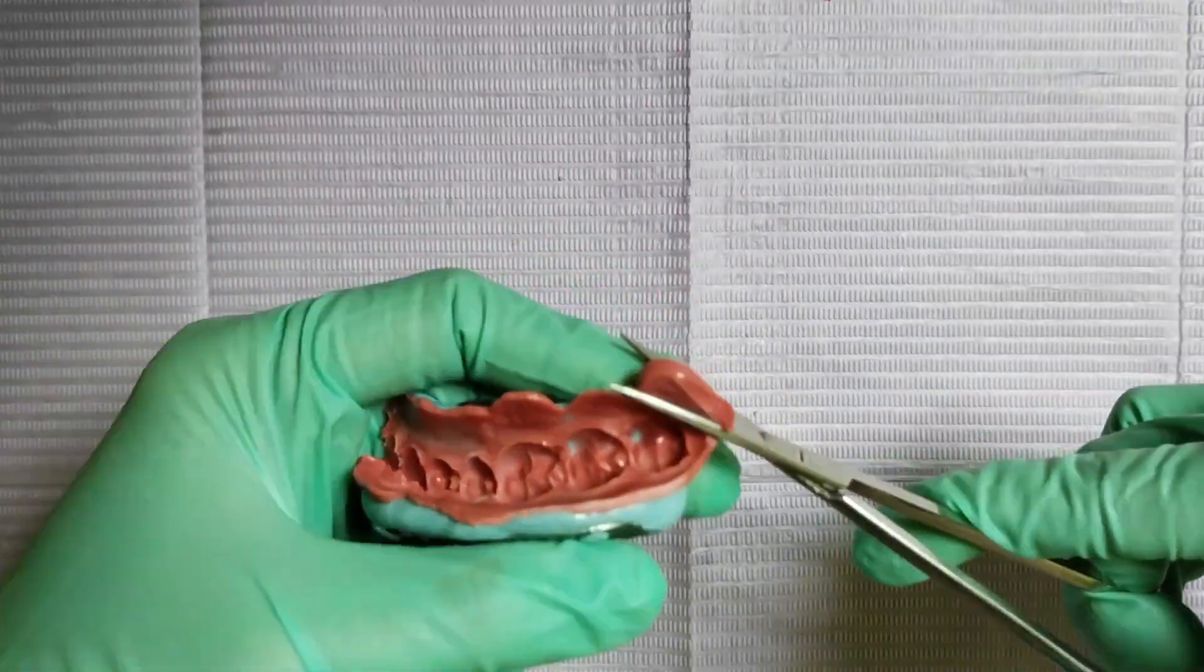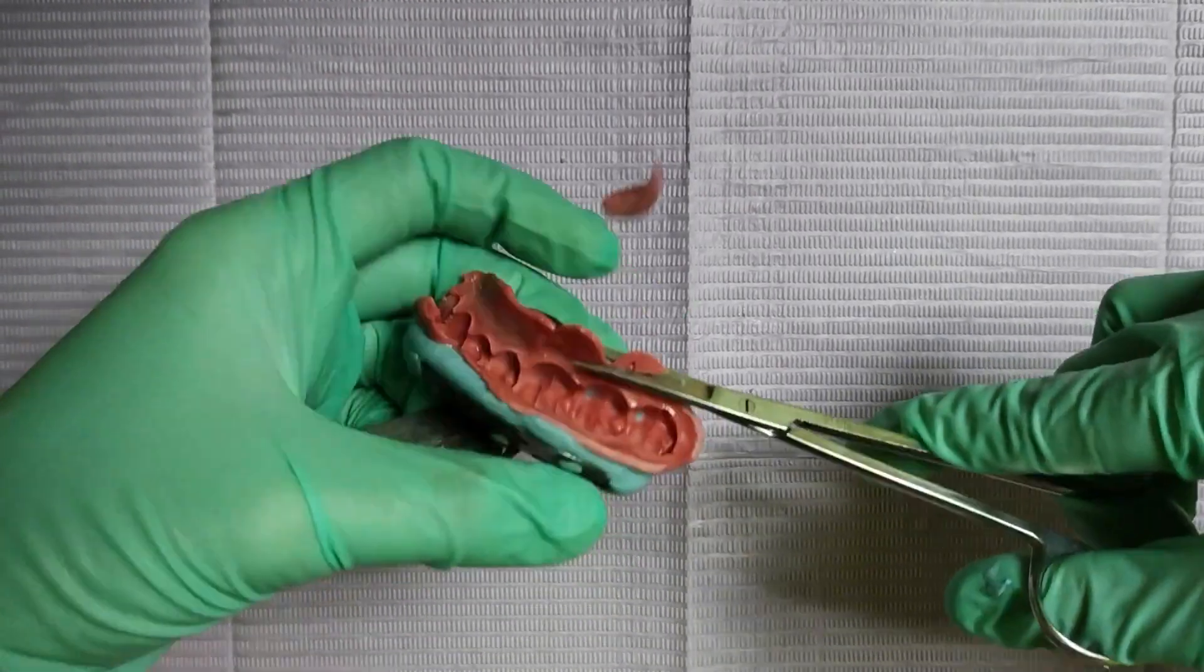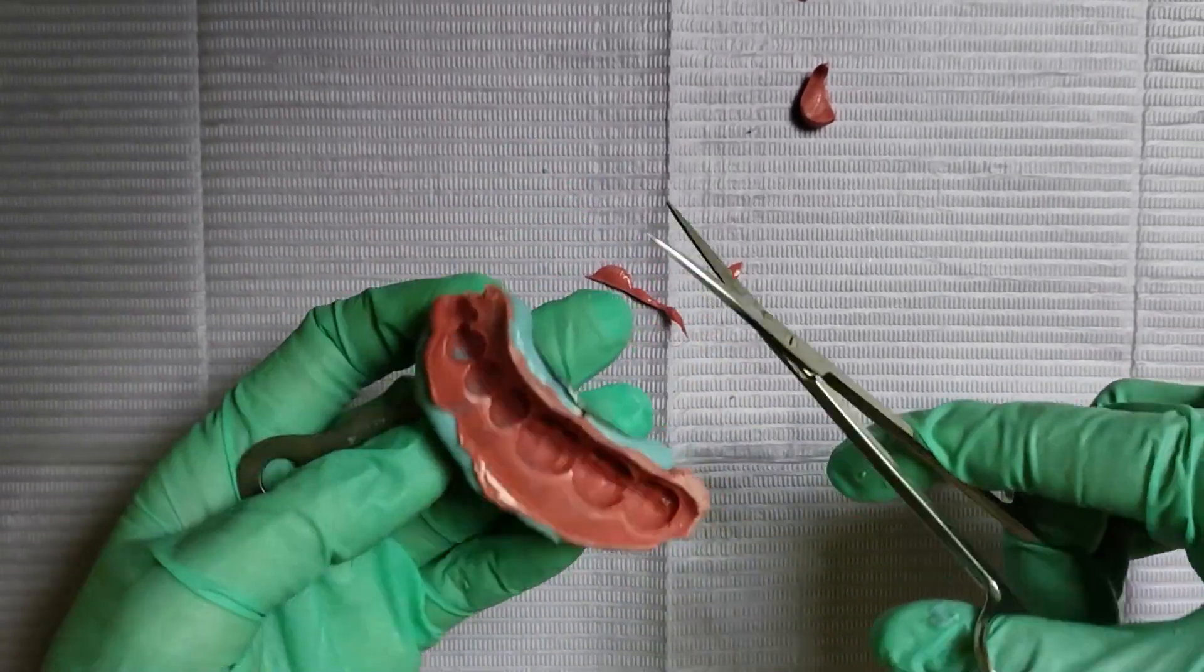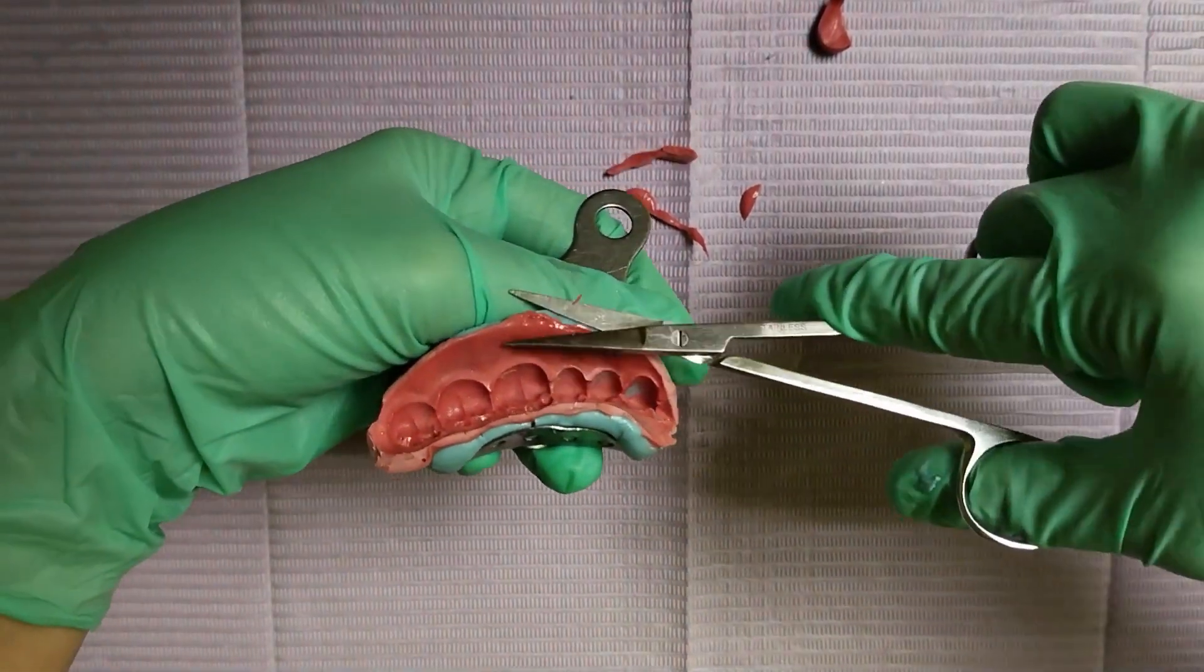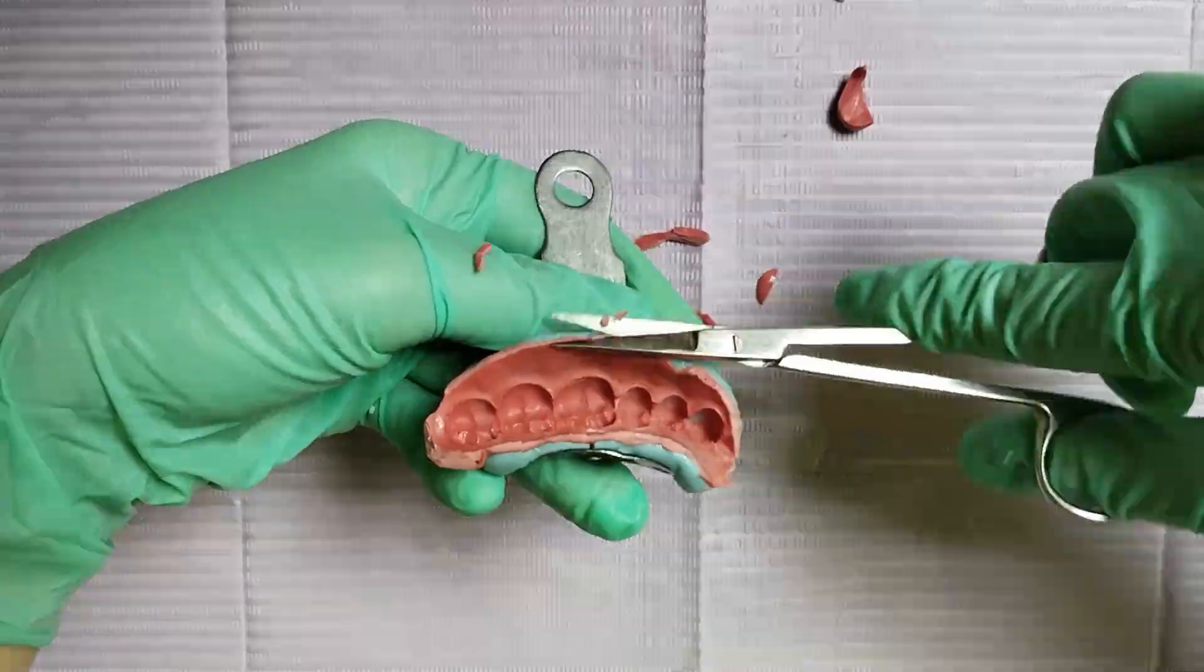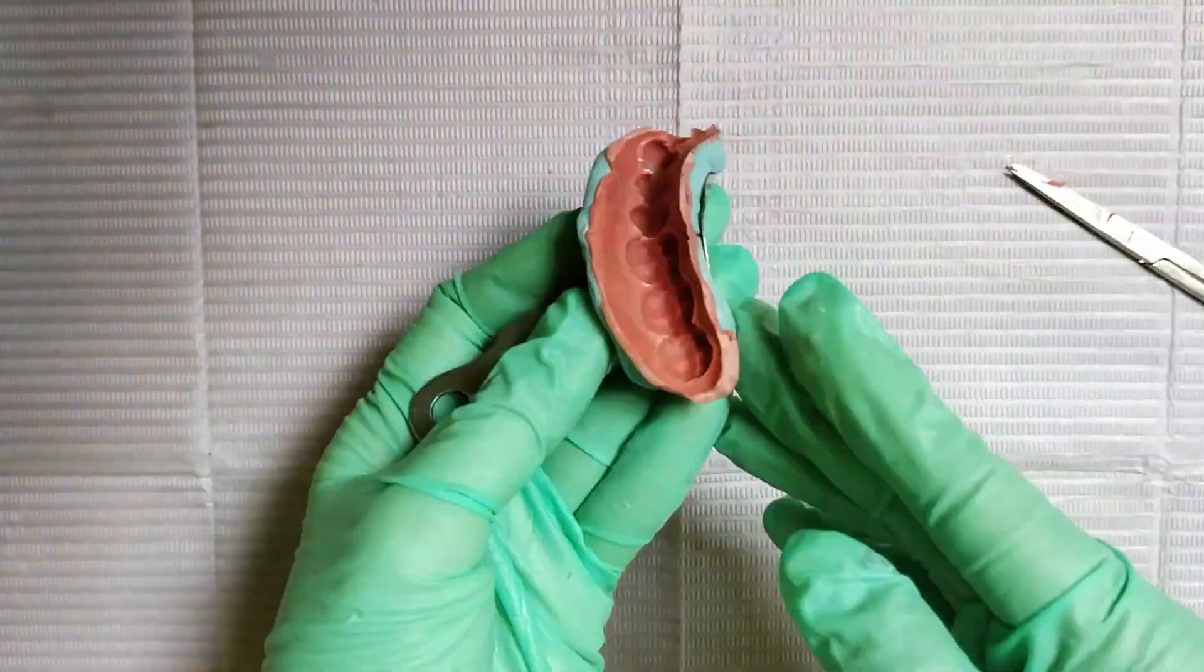After making a good impression, you can cut out the excess and make a cast using your type 4 gypsum. Use the boxing technique for making it.